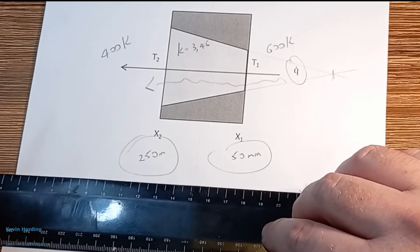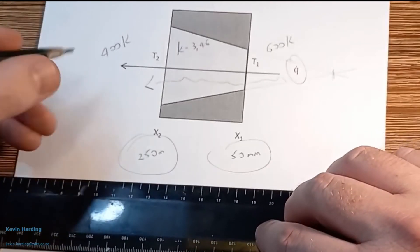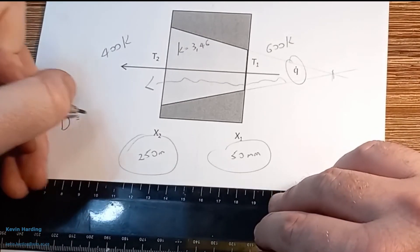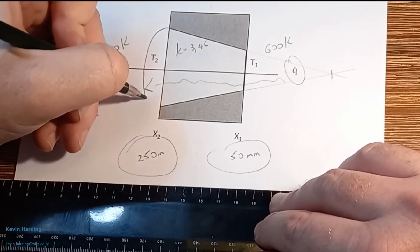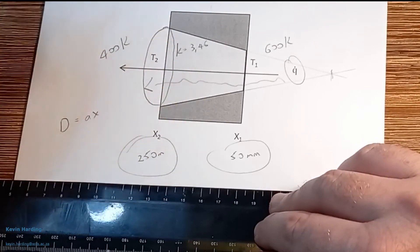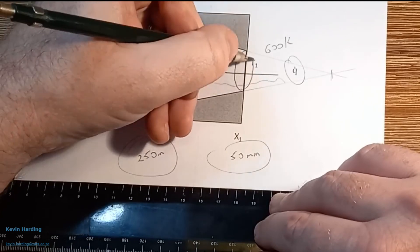The first part of this question is simply show an expression for the temperature given that the diameter is a multiplied by x. We're going to start with q equals minus ka dt dx going along the route. We said that the area is equal to pi r squared.